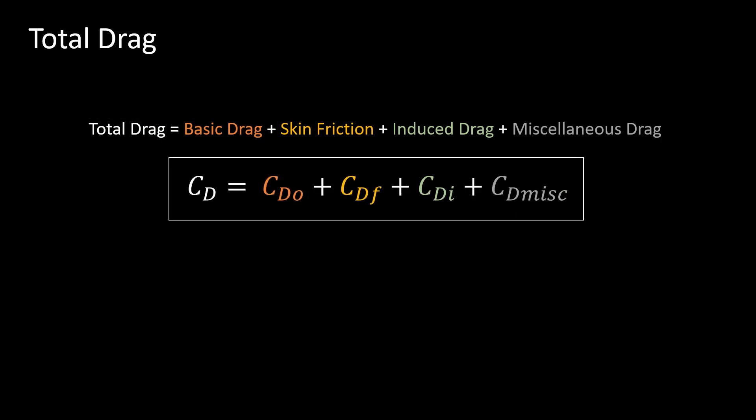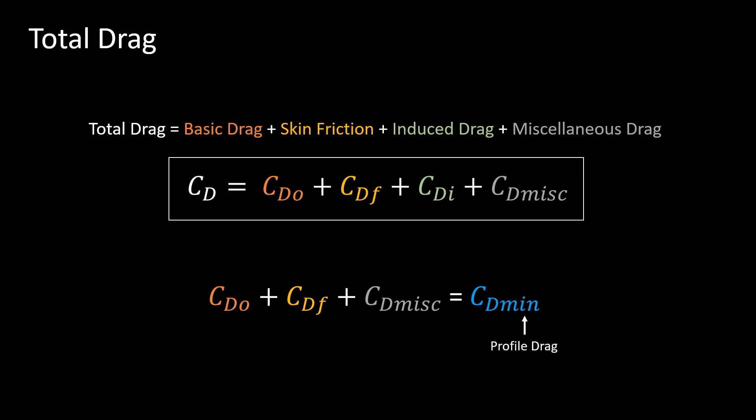For low subsonic aircraft, we can ignore the contribution of wave drag. In this equation, basic drag, skin friction drag, and miscellaneous drag are often lumped together into a single number called the minimum drag coefficient, CD-min. It is also known as profile drag, parasitic drag, or zero-lift drag.